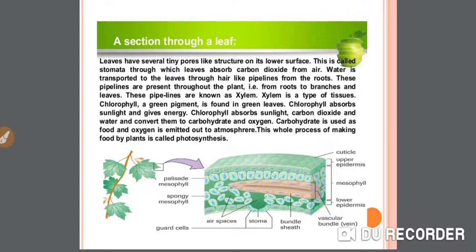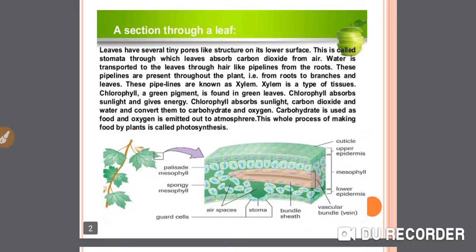Chlorophyll, a green pigment found in green leaves, absorbs sunlight and gives energy. Chlorophyll absorbs sunlight, carbon dioxide, and water and converts them to carbohydrate and oxygen. Carbohydrate is used as food and oxygen is emitted out to the atmosphere. This whole process of making food by plants is called photosynthesis. In the diagram, you can see the stomata and its different parts.